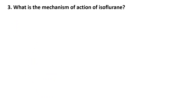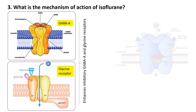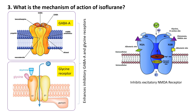What is the mechanism of action of isoflurane? Isoflurane, like other volatile anesthetics, exerts its effects by interacting with various receptors and pathways in the brain and spinal cord. It primarily enhances inhibitory GABA and glycine receptor activity, and inhibits excitatory NMDA receptors, ultimately leading to reduced neuronal excitability and muscle relaxation.